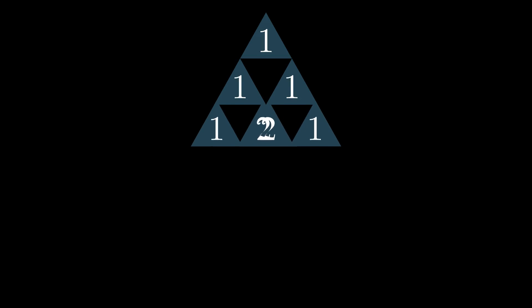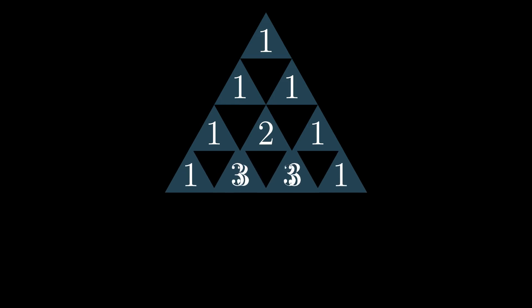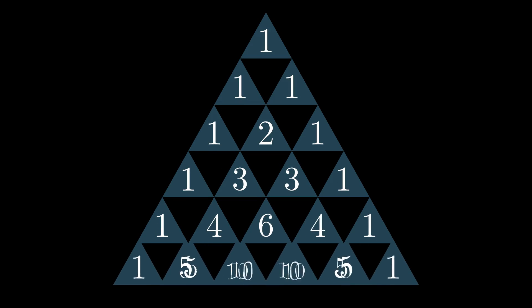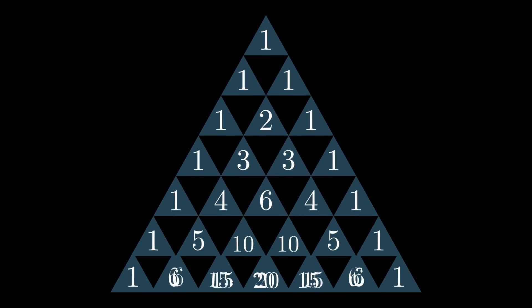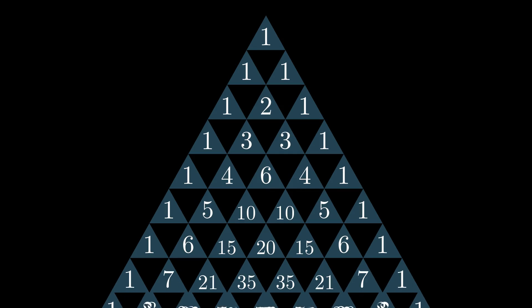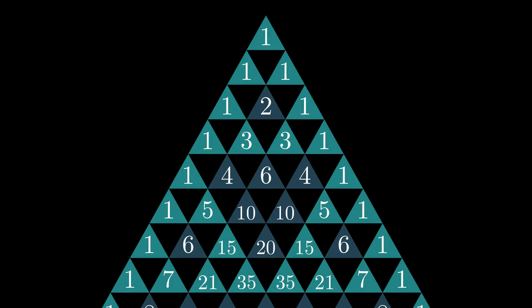Pascal's Triangle starts with a single one at the top, and every other number is created by adding up the numbers directly above it. To see an amazing pattern hidden inside here, let's color all the odd numbers green and leave the even numbers in dark blue. You can now see a pattern like Zelda's Triforce.